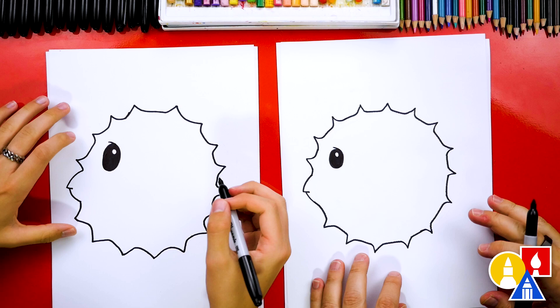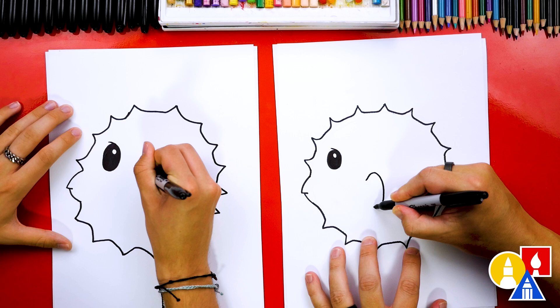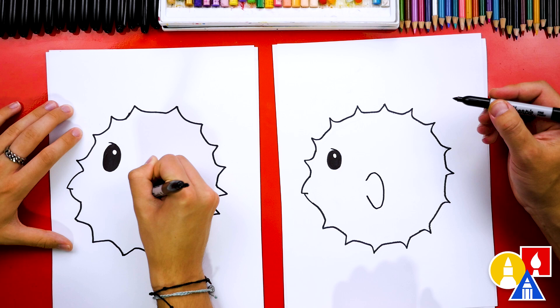Now we're ready to add more details. Let's draw the fins. We're going to draw a backward C shape right here in the middle of our blowfish. We're going to start by curving up, around. We're going to come down kind of low and then back up. Yeah, there you go.